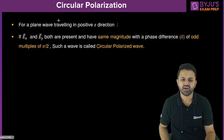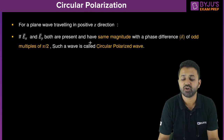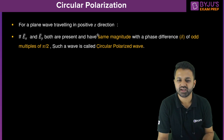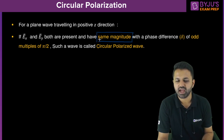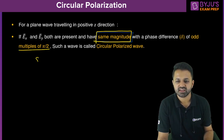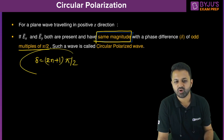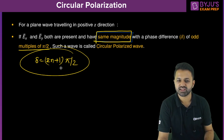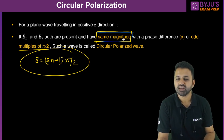When we go to circular polarization, two important conditions must be satisfied. First, the amplitude of both components must be the same. Second, the phase difference must be an odd multiple of π/2. Both conditions — equal amplitude and phase difference equal to an odd multiple of π/2 — must be satisfied together for circular polarization.